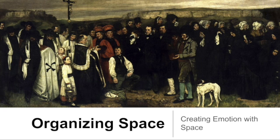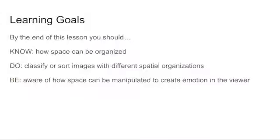So our learning goals: we need to know how space can be organized. We're going to be looking at four specific strategies, and we're also going to learn how to classify or sort images based on those different spatial organizations. Lastly, we need to be aware of how space can be manipulated in order to create emotion in the viewer.